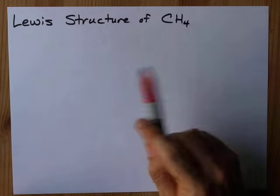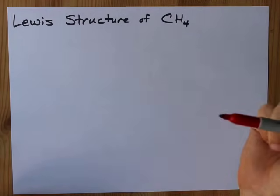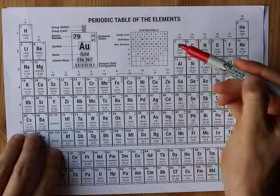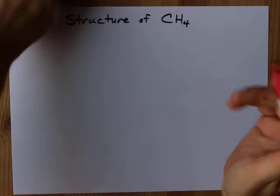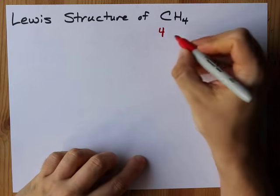CH4, methane. Let's draw its Lewis structure. You're gonna need to know how many valence electrons each one brings. Carbon in group 14 brings four valence electrons. I'm gonna write four here for myself.